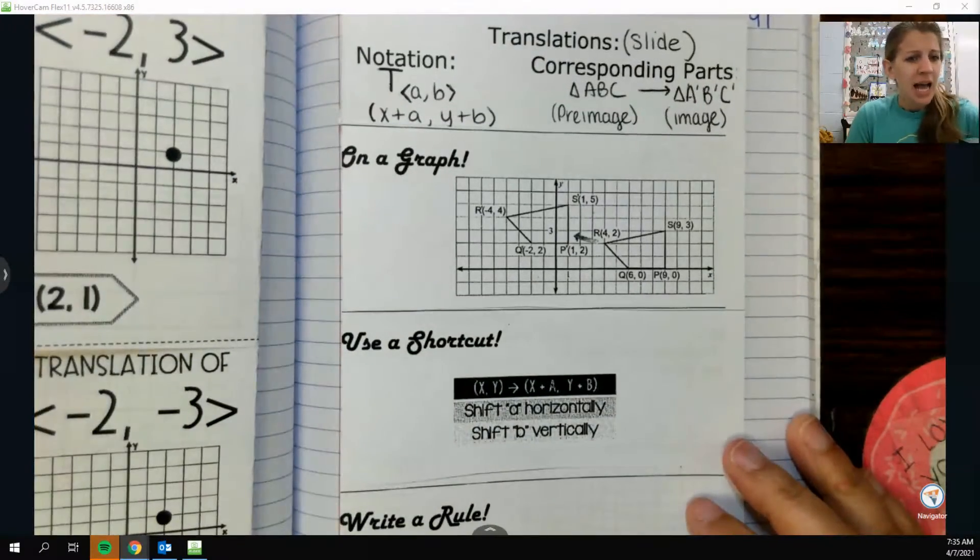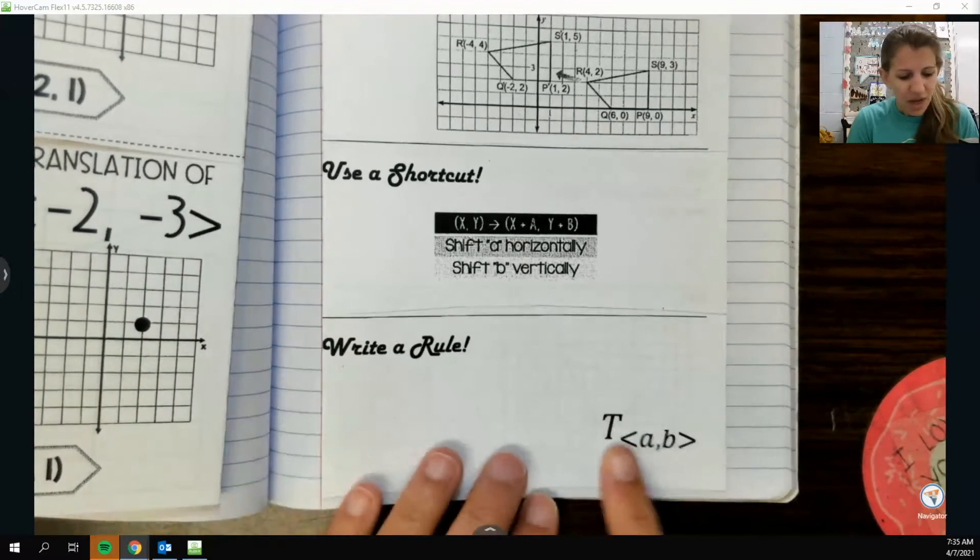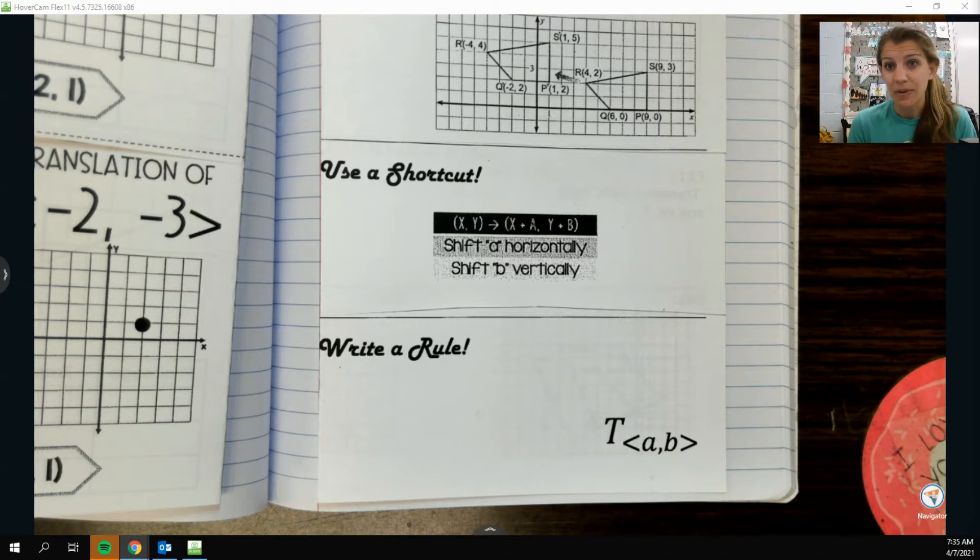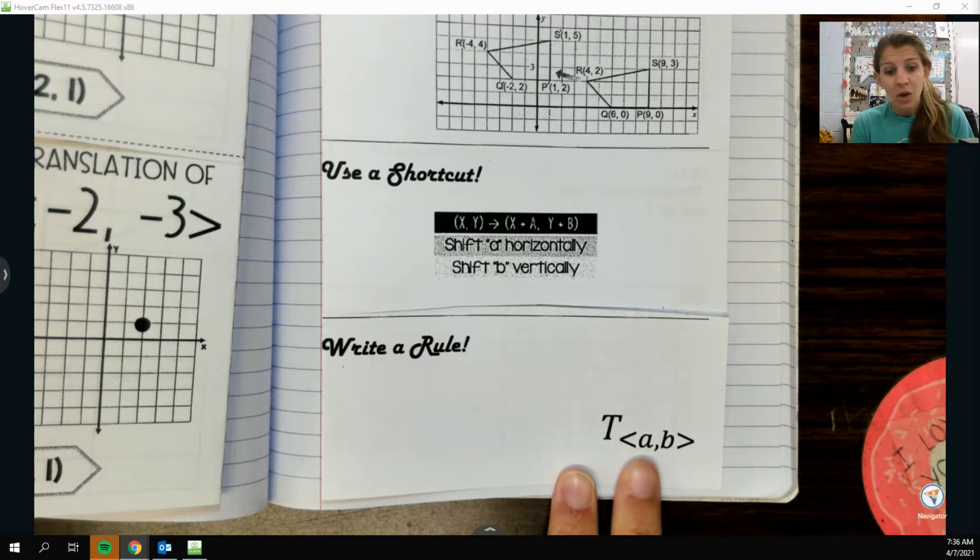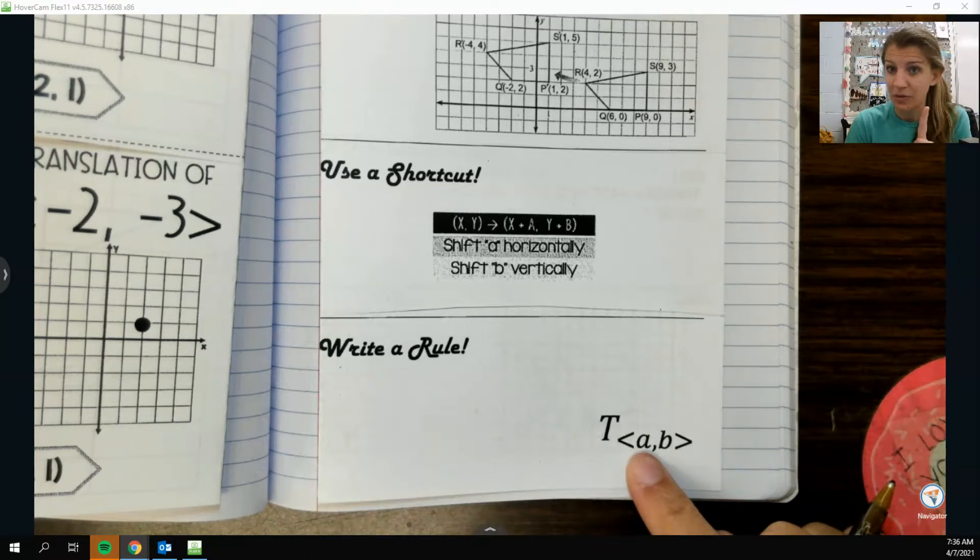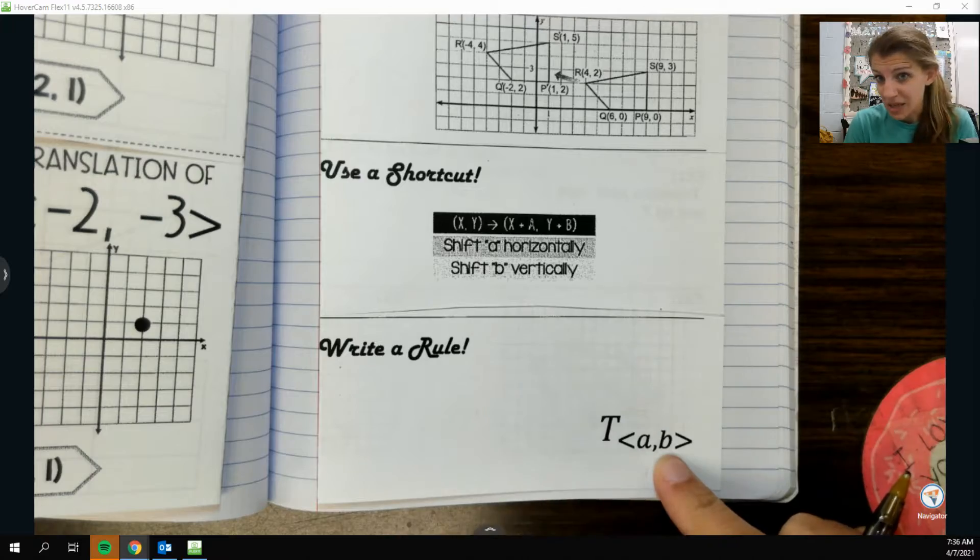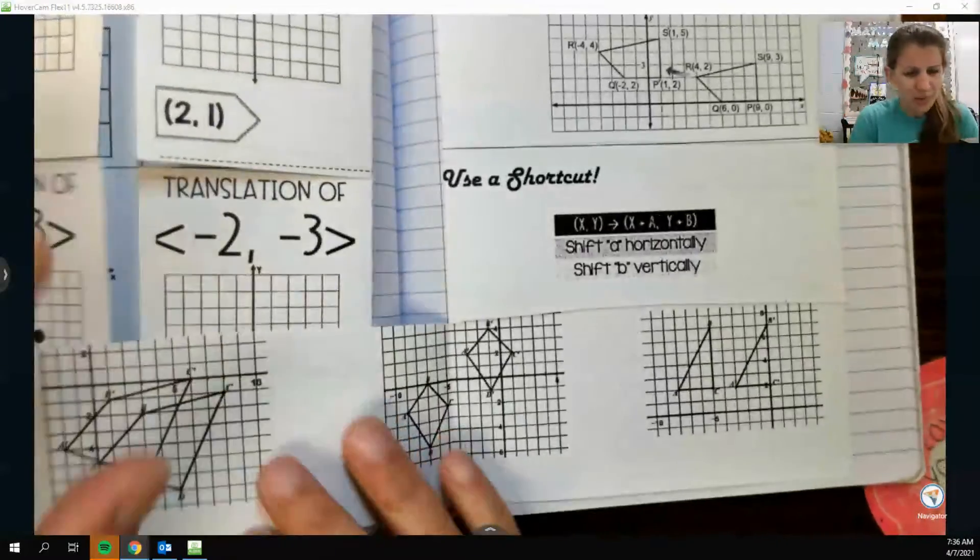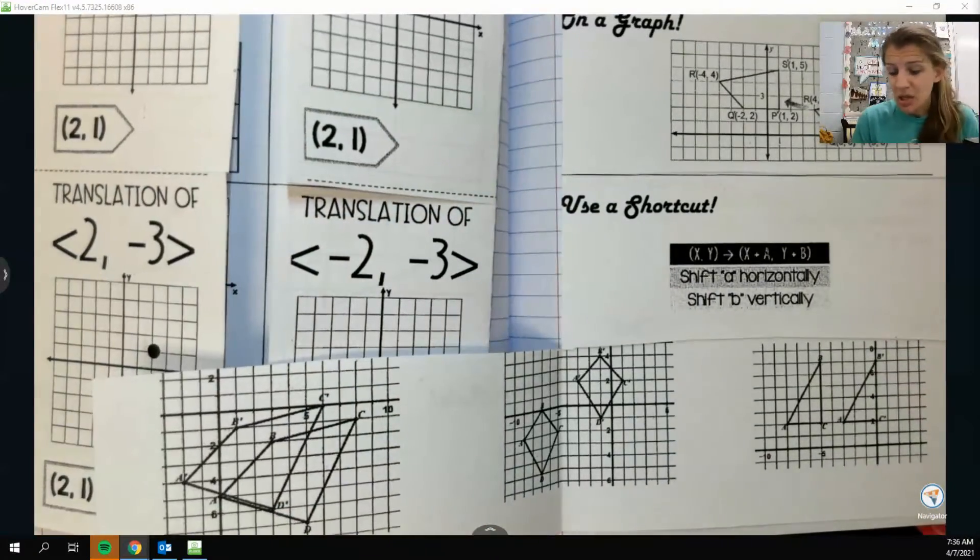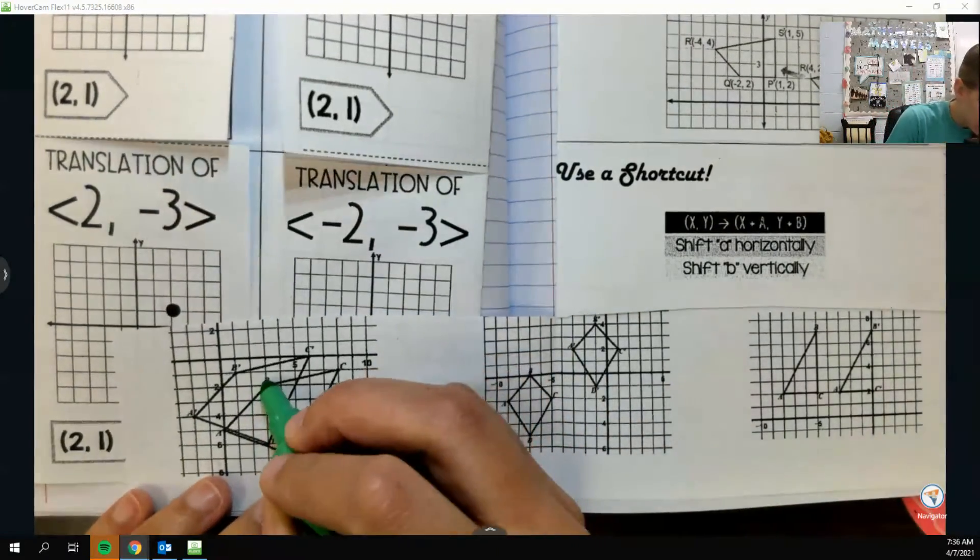Starting with this one here, I actually think I want to go all the way to the bottom and work our way up. So, writing a rule. If I'm looking at a graph where there are already two shapes, and I want to describe what's going on, then I want to write a translation rule. If we open this up, I have to identify what my pre-image is, so the original figure. We can always tell because it won't have the primes next to it. So I'm going to outline my pre-image in green.